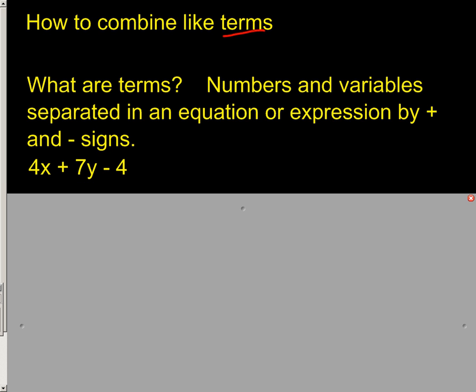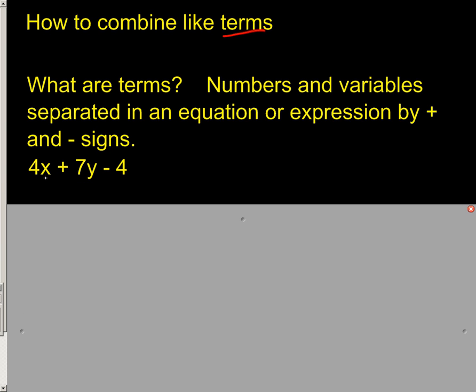Let's take a look at this expression right here. There's no equal sign. How many terms do we have? Here's a number and a variable. Here is a plus sign, so this is term number one. Here is a number and a variable, so that's term number two. Here's your minus sign, so here's your third term right here, which is the four.